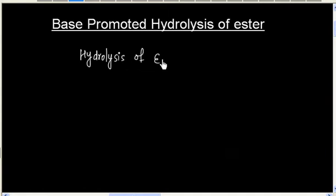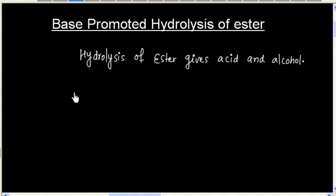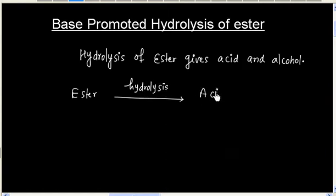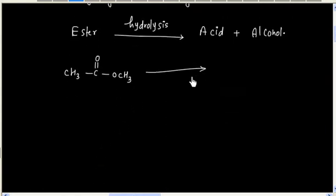Hydrolysis of an ester gives acid and alcohol. If we have an ester and it is hydrolyzed, it will generate acid plus alcohol. For example, if we have this ester and it is hydrolyzed, we will have acetic acid and methanol.